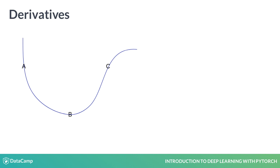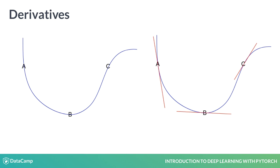For example, in the function shown here, points A and C have large derivatives — the line is steep in those positions — while point B has a very small derivative. If you haven't ever heard about derivatives, I would highly recommend taking a look at them on Khan Academy, for example.